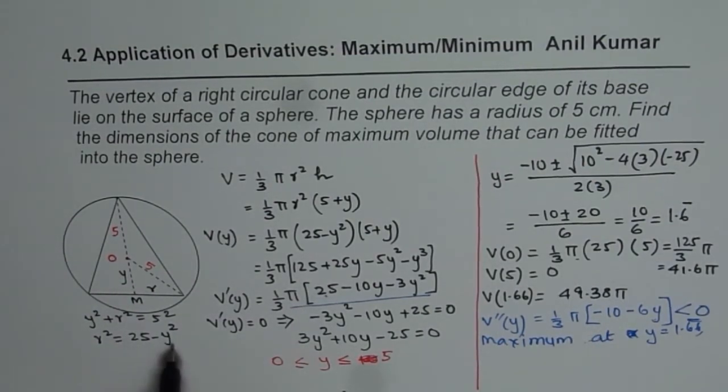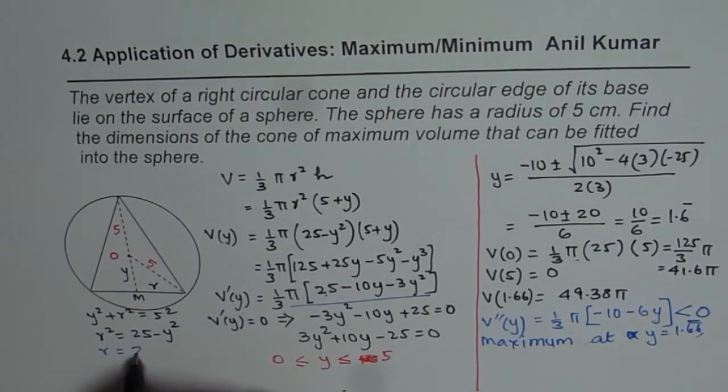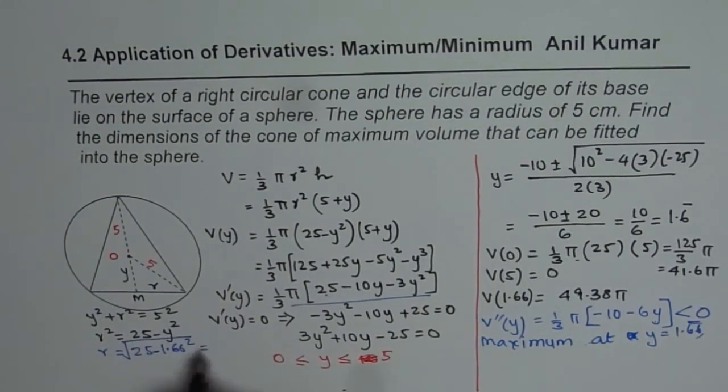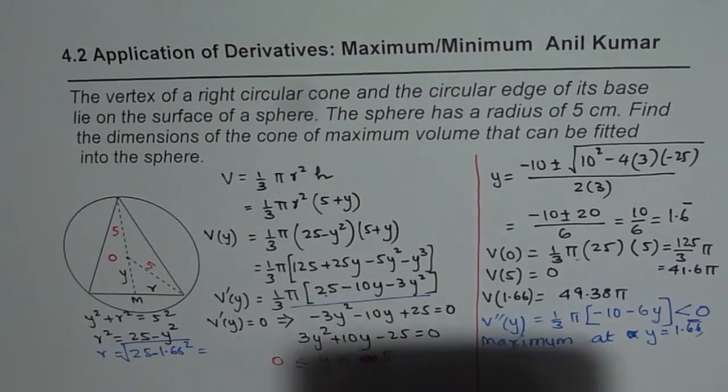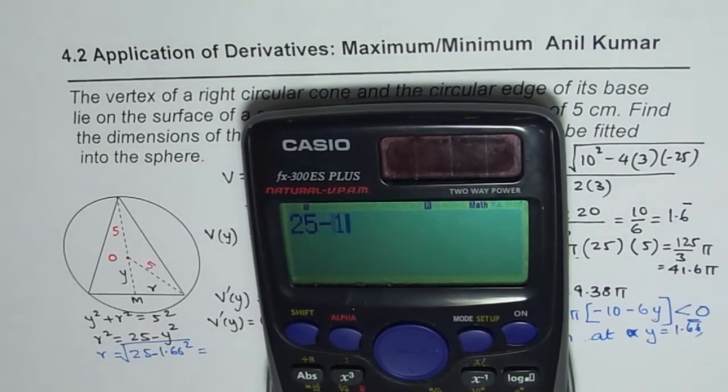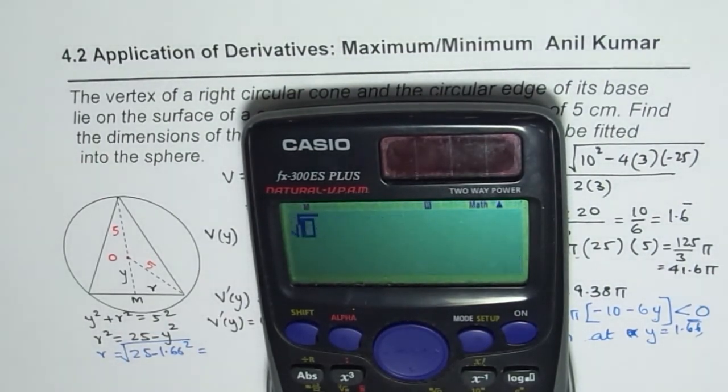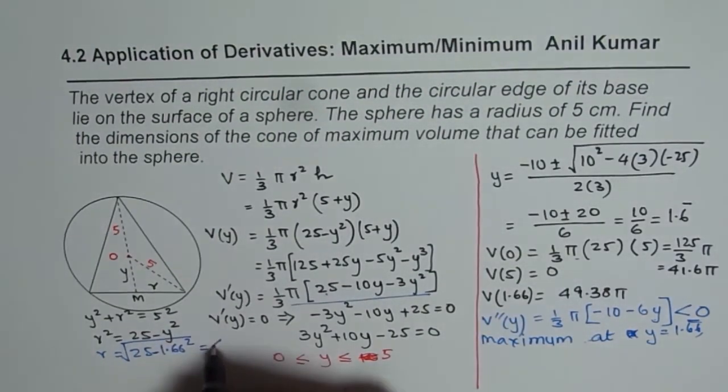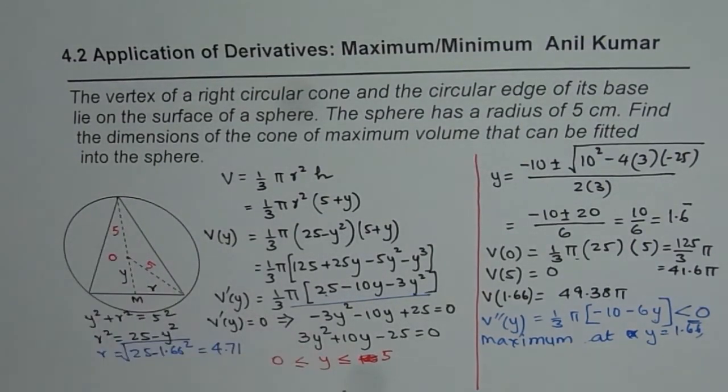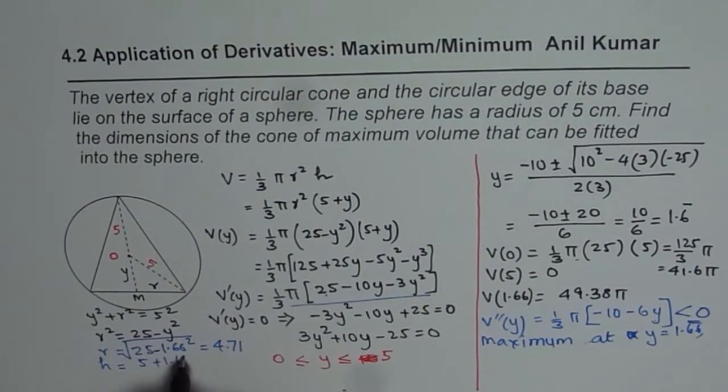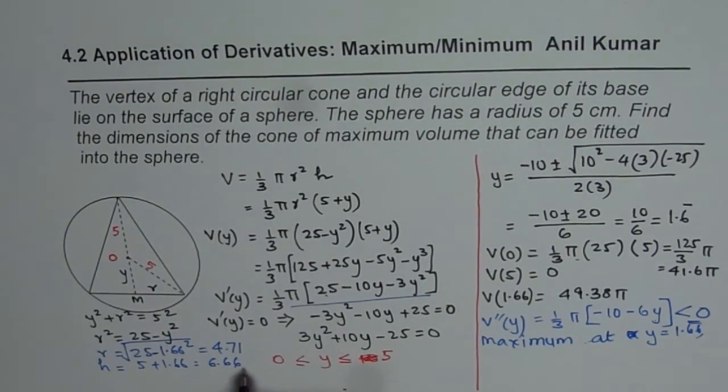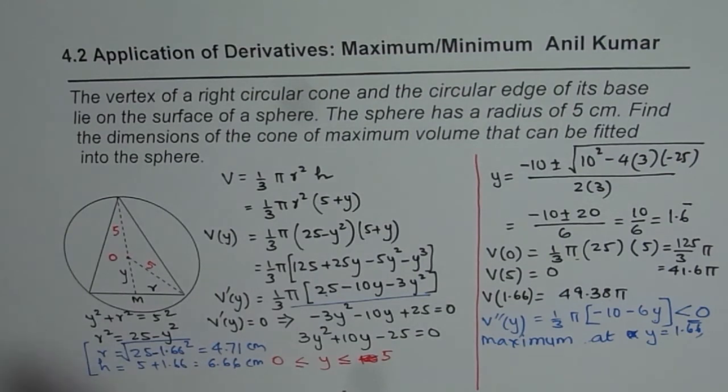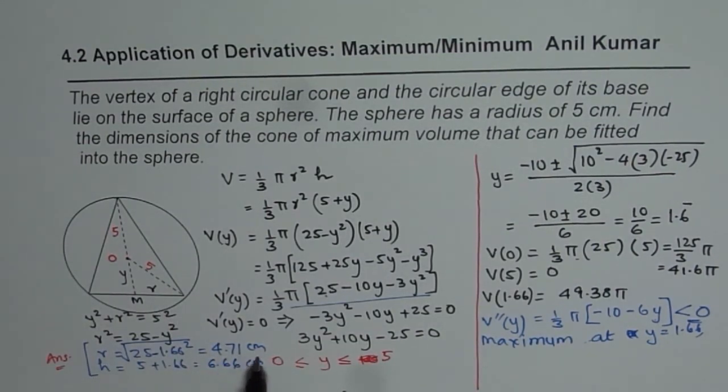And so once we know the value of y, we can find what r is. So r is equals to square root of 25 minus 1.66 squared. So that is the value of r. So let us calculate this. 25 minus 1.66 squared equals to square root of answer equals to 4.71. So 4.71 is the radius and the height for us will be equals to 5 plus 1.66 which is 6.66 and the units are centimeters. So that becomes our answer. So this is the answer. So the maximum volume for the cone will be when radius is 4.71 centimeters and the height of the cone is 6.66 centimeters.